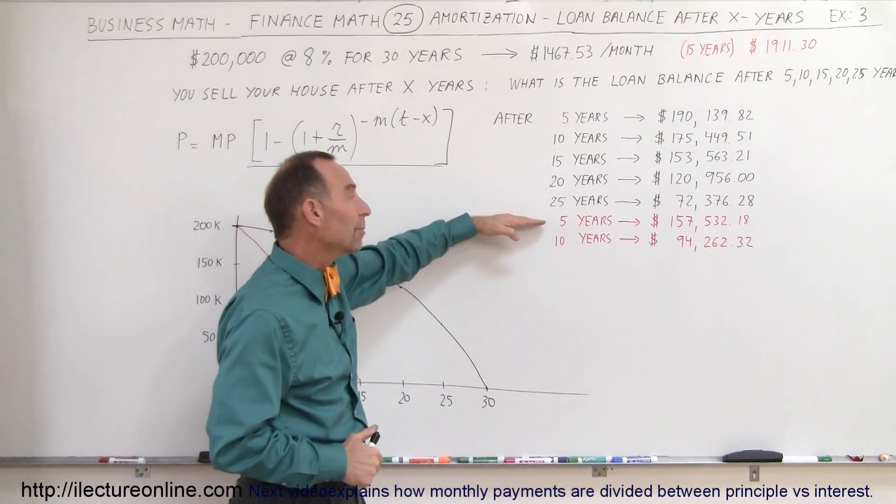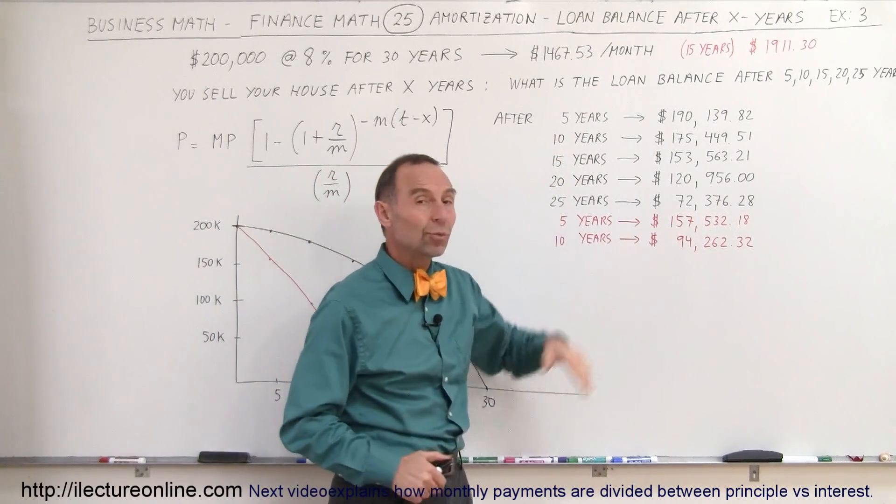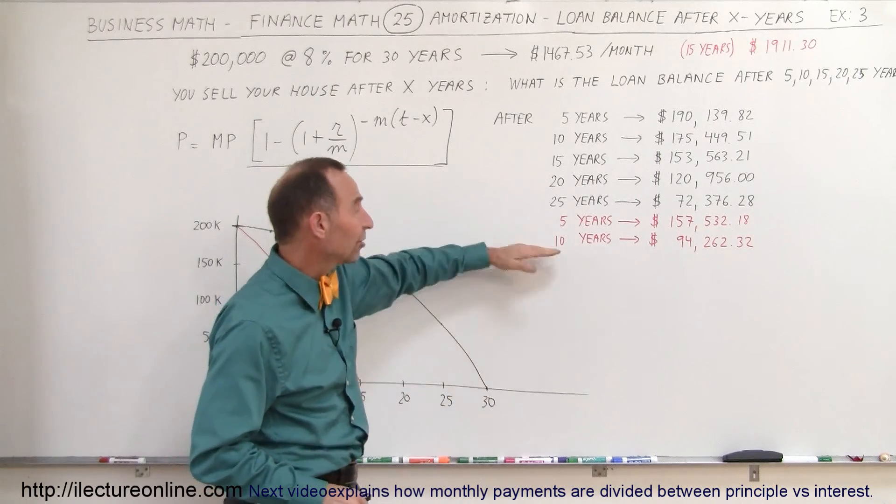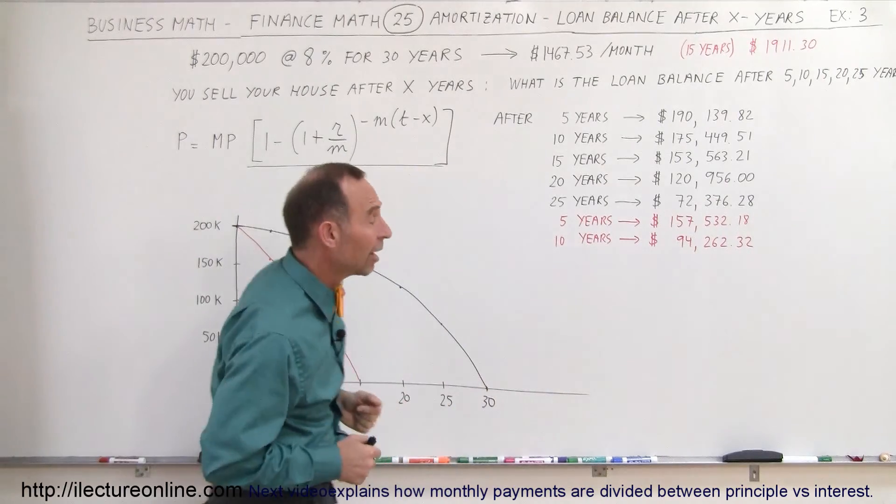Because after 5 years of making payments, of course there will be larger payments, you will have paid off $43,000 of your principal. After 10 years you will owe less than 10% of the original amount and after 15 years it's all paid off.